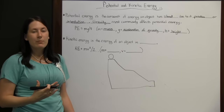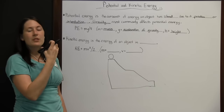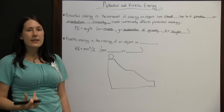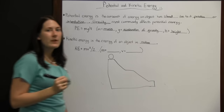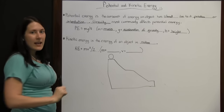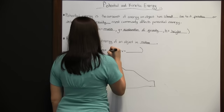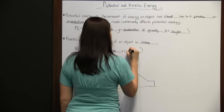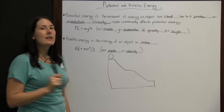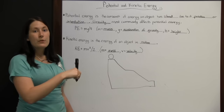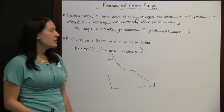Potential energy is how much energy an object has stored while it's sitting still. Kinetic energy is the energy of an object in motion — when an object is actually moving, that's when you're seeing kinetic energy. Kinetic energy (KE) can be found with the formula: KE = MV² ÷ 2, where M equals mass and V equals velocity. Mass times velocity squared divided by 2 gives you the kinetic energy.